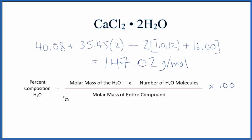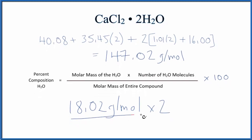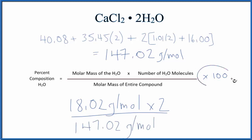When we use the formula to get the percent composition of water in the calcium chloride dihydrate, we take the molar mass of water — that's 18.02 grams per mole — and multiply it by the number of water molecules. We have two separate water molecules around the calcium chloride, so we multiply by two. We divide the whole thing by the molar mass for the entire compound, then multiply by 100 to get our percent.